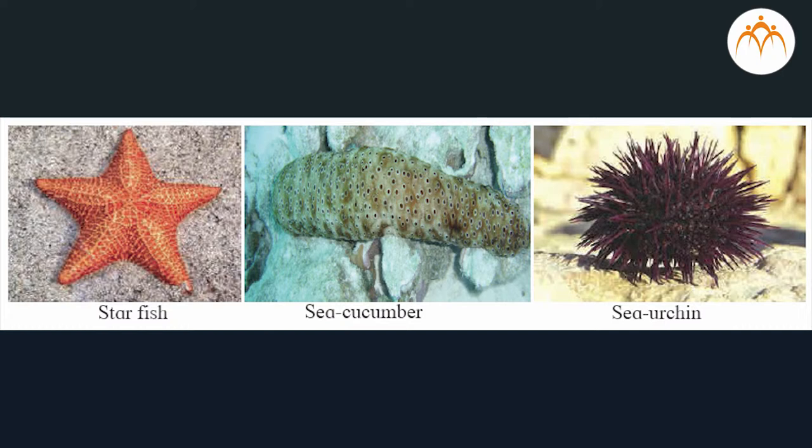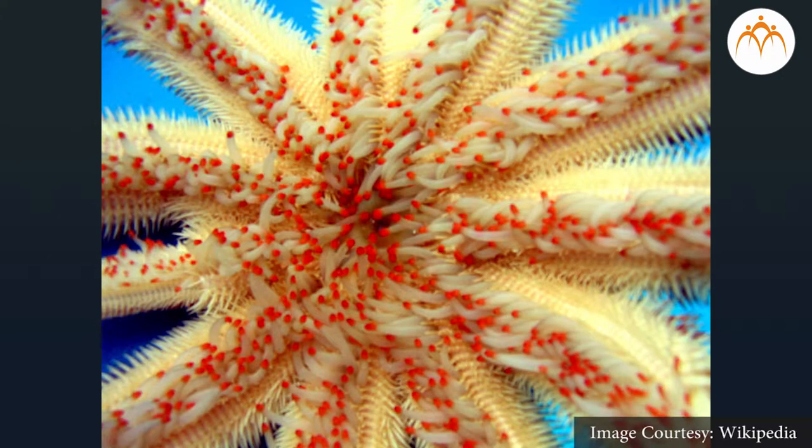Tube feet are also useful for capturing prey. Some animals are sedentary. They have a skeleton made up of calcareous spines and ossicles (plates). These animals have a good ability of regeneration. These animals are mostly unisexual. Examples: starfish, sea urchin, brittle star, sea cucumber, etc.